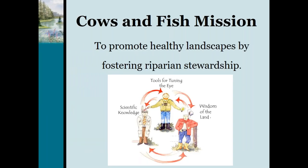A common question we get from landowners is, we don't have cows, or we don't have fish — does Cows and Fish still want to work with us? And yes, we at the Alberta Riparian Habitat Management Society work with all types of landowners and land managers. The core of our mission is to improve riparian understanding and management, whether you are a rancher with cows, a lake village resident, or an urban dweller.